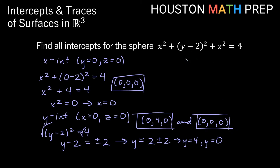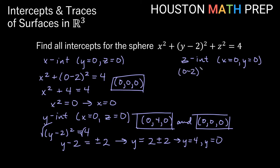Let's move on and do our z-intercept. That's going to be when x equals 0 and y equals 0. X equals 0 zeros out the first term, but y equals 0 will still leave us with (0 minus 2) squared like before. So we get (0 minus 2) squared plus z squared is equal to 4.